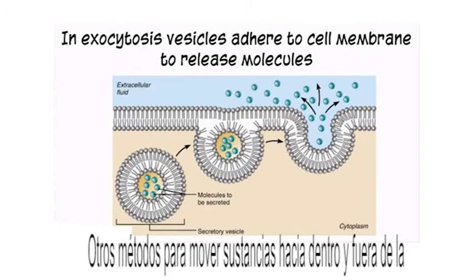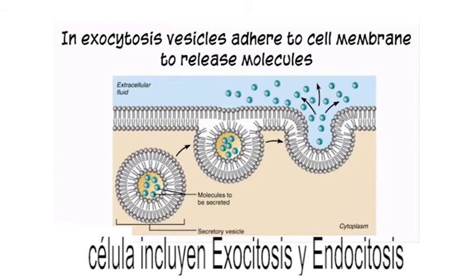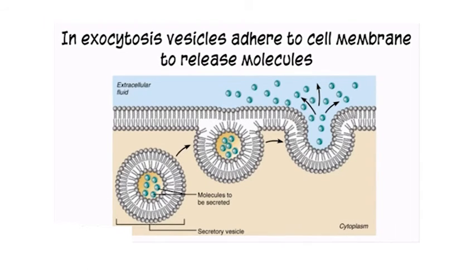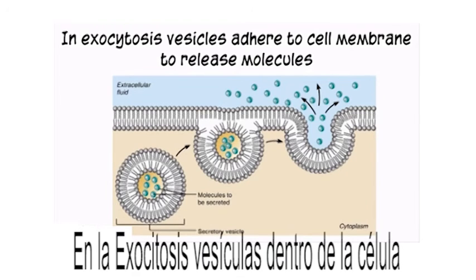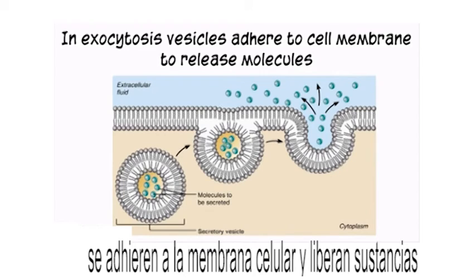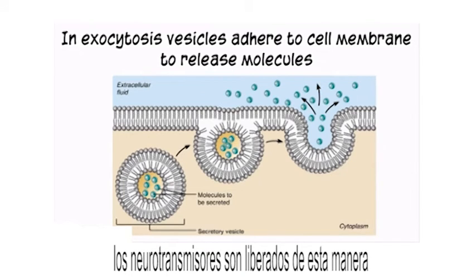Other methods of moving substances in and out of cells include exocytosis and endocytosis. In exocytosis, vesicles inside of the cell adhere to the cell membrane and release substances. Neurotransmitters are released this way.